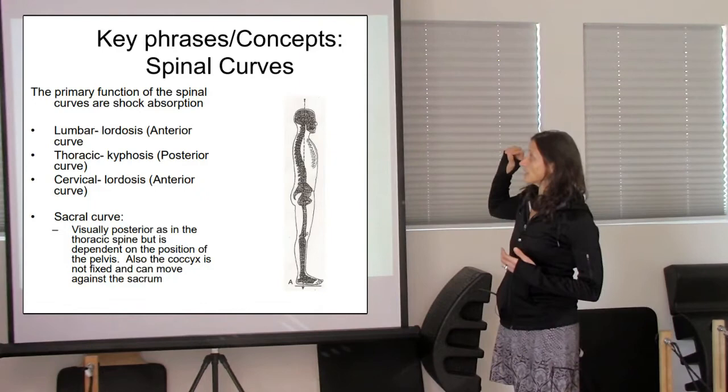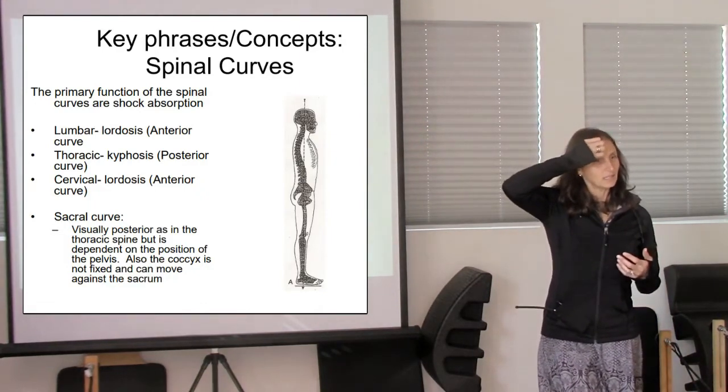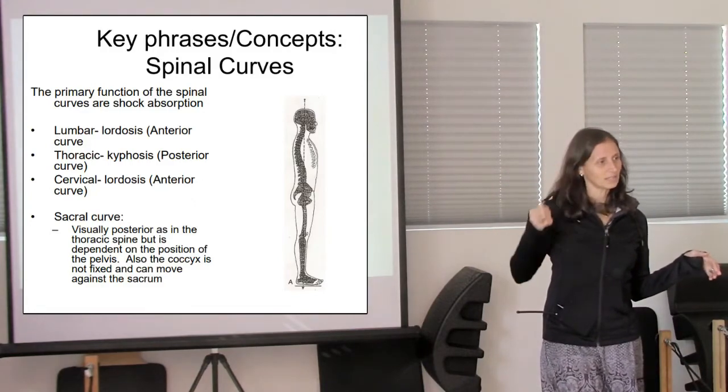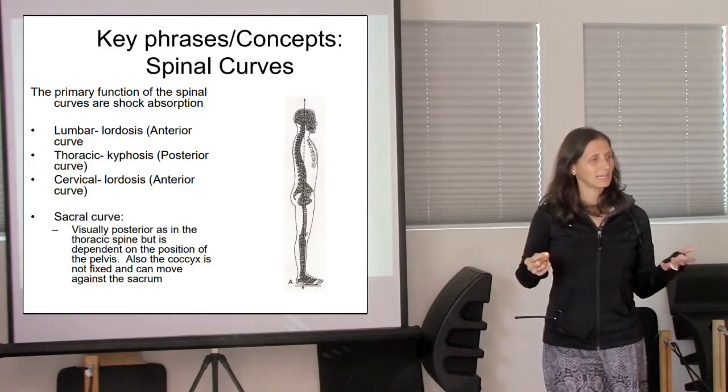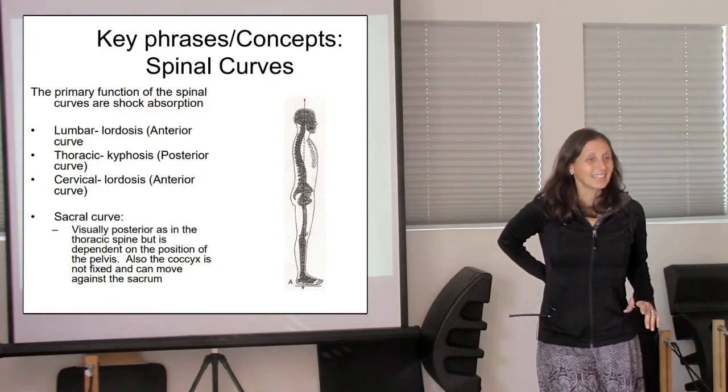The primary function of the spinal curves are what? Why do we have curves in our spine? To absorb shock. And what was Joe Pilates' initial thoughts on the spine? Flat back, right. And why did he think that?